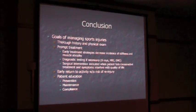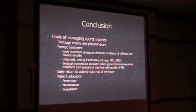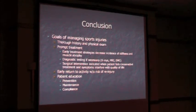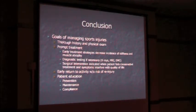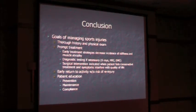In conclusion, the goals of managing sports injuries: do a thorough history and physical exam, prompt treatment, recognize the mechanism of injury, get adequate history, do a good physical exam, and determine if further tests are necessary such as an MRI, x-ray, or EMG. Determine if the patient needs to be referred out or if it's something that can be rehabilitated and left to heal. Early return to activity without risk of re-injury is the goal. Make sure patients understand every point of intervention — why you're doing it and what the outcome is — because that's key for prevention, maintenance, and compliance.